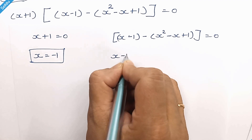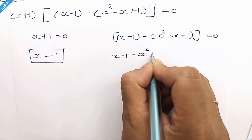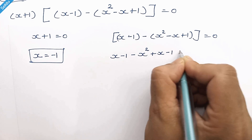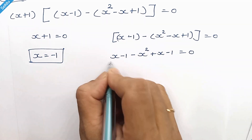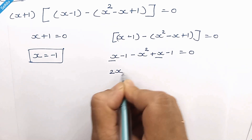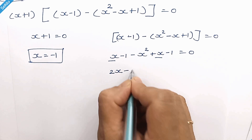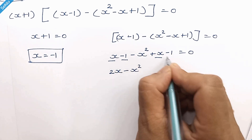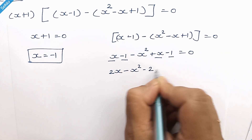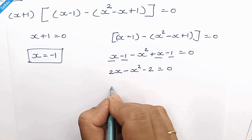Simplifying the second factor: x plus x minus 1 equals 0, which gives 2x minus x squared minus 2. Let's rearrange.